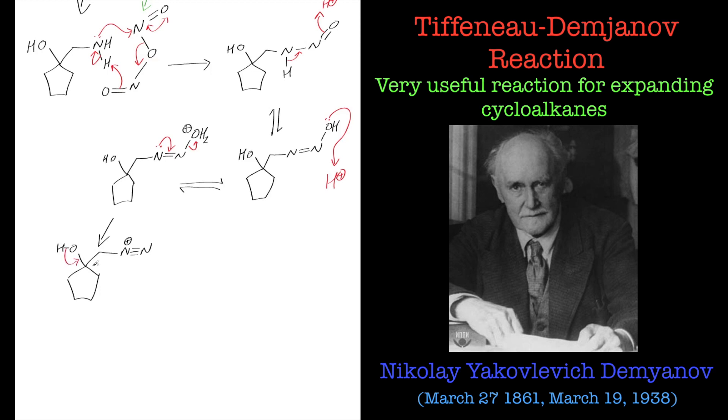We get collapse of the alcohol into the carbonyl, a 1,2-sigmatropic shift, the expulsion of nitrogen as a gas, and that should give us a ring-expanded ketone.